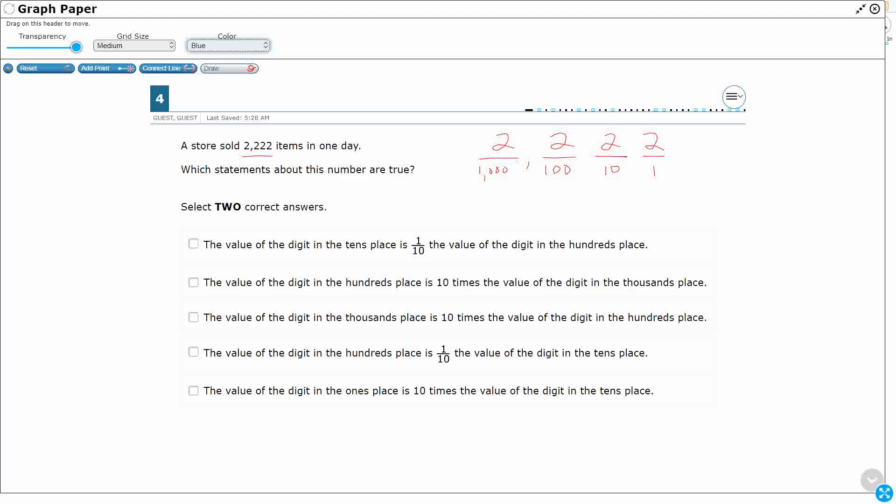So let's see. The value of the digit in the 10s place, okay? So let's go ahead and write that. I'm going to write 2 times 10 because that's the value of the digit in the 10s place. Is 1/10th the value of the digits in the 100s place? That's 2 times 100.